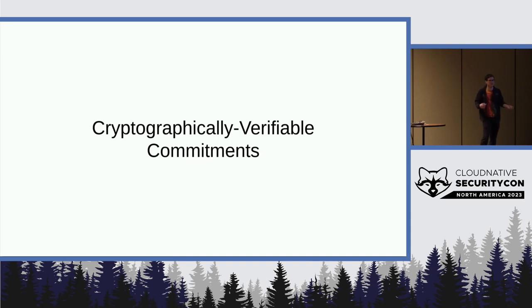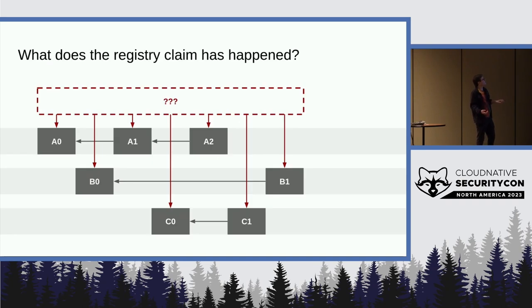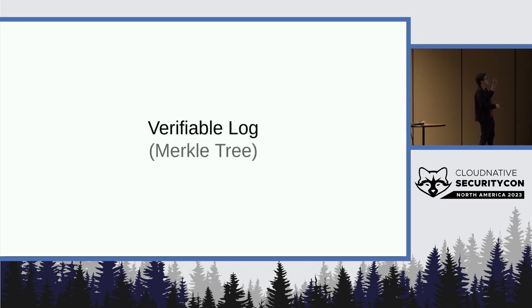Now we need to make cryptographically verifiable commitments to this data. And we're going to start by somehow making the registry commit to what's happened in the past. Like which records are part of its accepted history and in what order they happened. And we do this by taking a data structure from certificate transparency that maybe some of you will be familiar with called a verifiable log that's based on the idea of a Merkle tree.